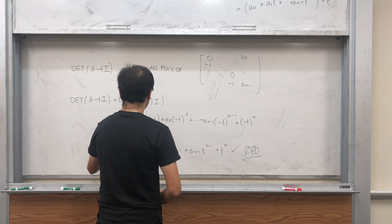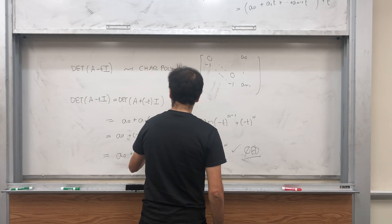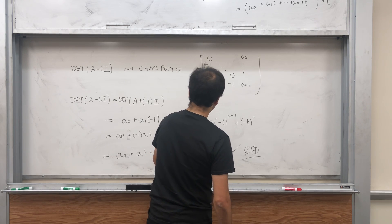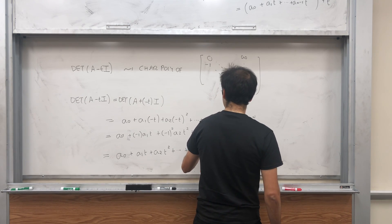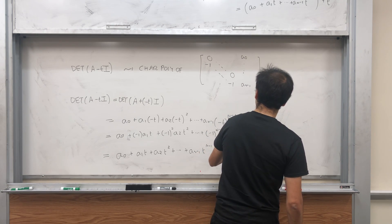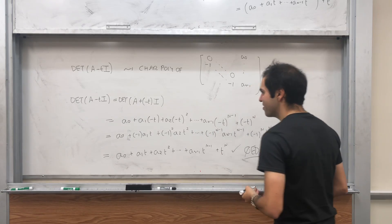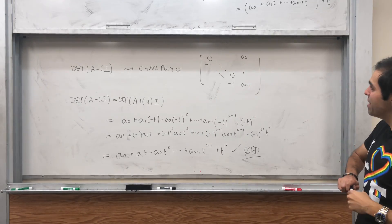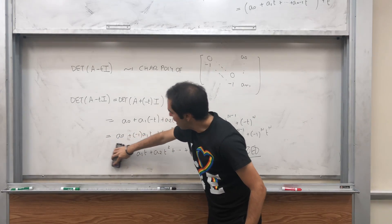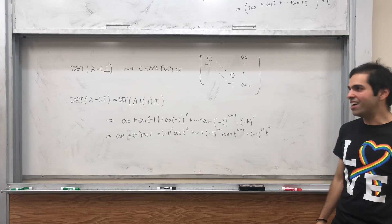And you can just get it as A_0 plus if you want, minus 1, A_1*t, plus (-1)^2*A_2*t^2 plus dot dot dot plus (-1)^{n-1}*A_{n-1}*T^{n-1} plus (-1)^n*T^n. So in other words, for this matrix, even though it looks really complicated, the characteristic equation is actually very easy to calculate.